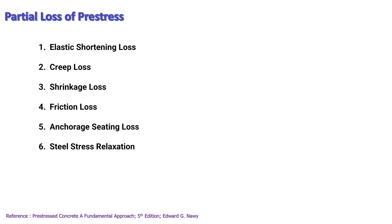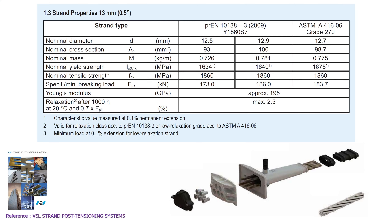Partial Loss of Pre-stress consists of elastic shortening loss, creep loss, shrinkage loss, friction loss, anchorage seating loss, and steel stress relaxation. The mechanical property of the strand is as shown here.